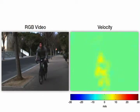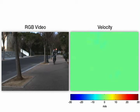As seen in this example, the output of our algorithm is a full-field image of the axial velocity, that is, the speed of the scene towards or away from the camera.